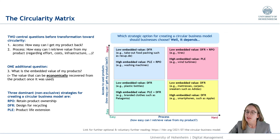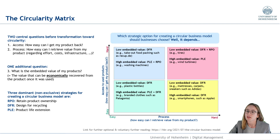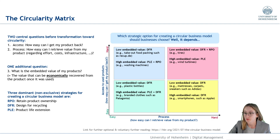For example, in the pink box it is very hard to get access to the product and very hard to retrieve value from it. For products with a low embedded value, such as tires, two strategies might be suitable: the DFR strategy and the RPO strategy. For products with a high embedded value, such as wind turbines, a business might choose the PLE strategy.